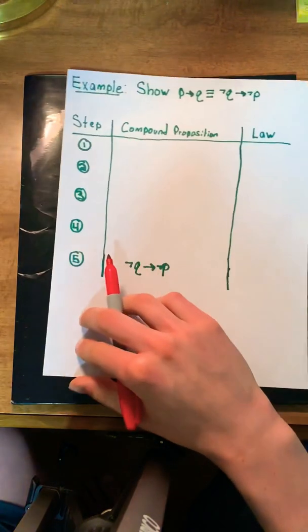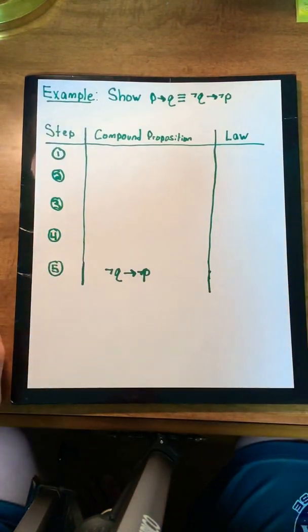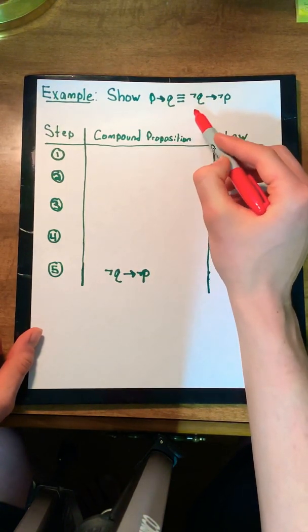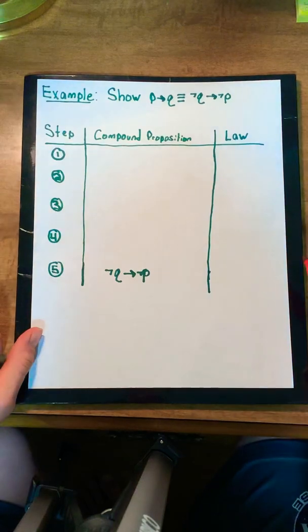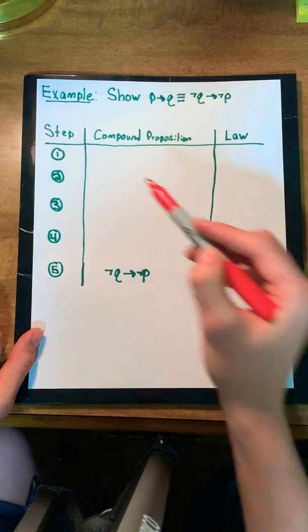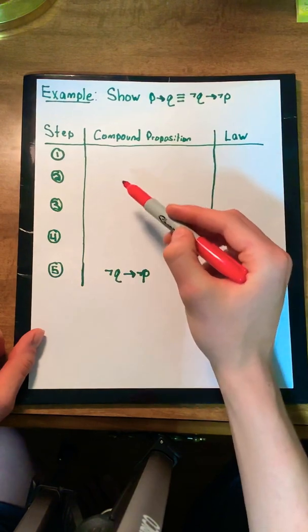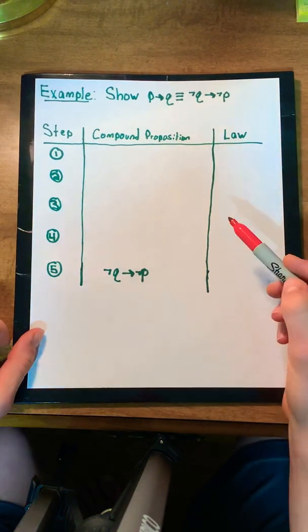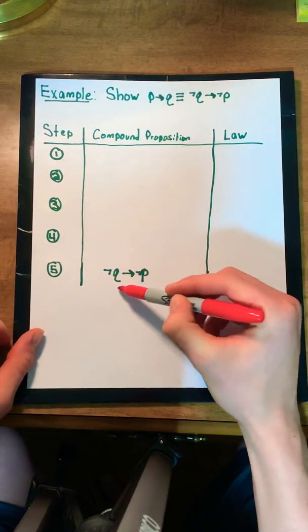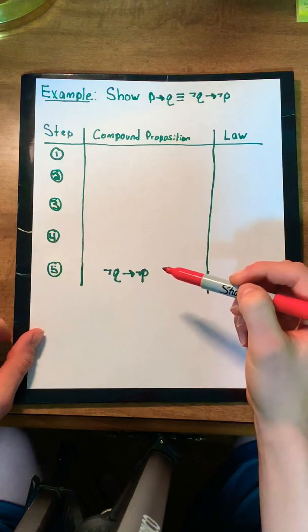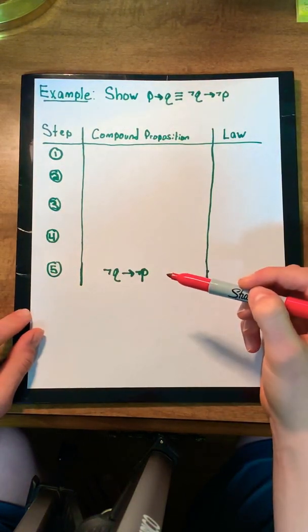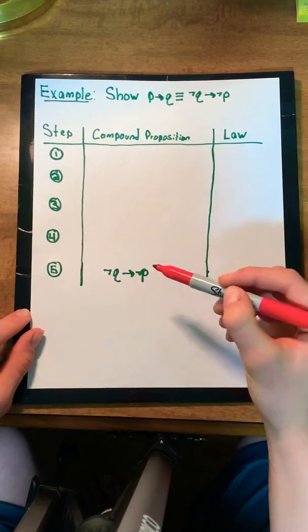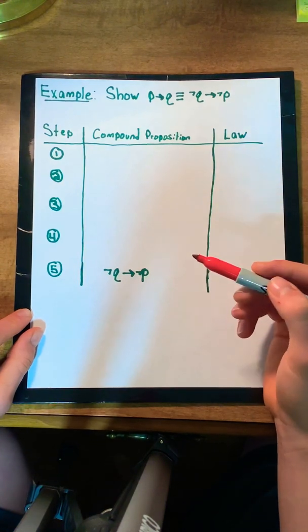Let's move on to an example problem. We're tasked with showing that if P then Q is logically equivalent to if not Q then not P. To set up your logical equivalences, you're first going to set up a table that looks something like this. I've laid out my steps, what the compound proposition will look like, and what law I'm going to be using. I've also put the logical equivalence I'm trying to show at the bottom. Just leave yourself enough room.